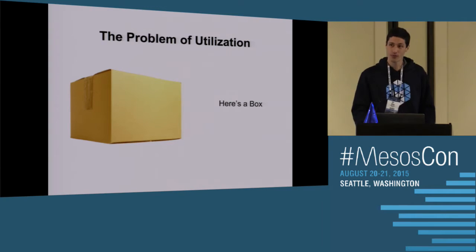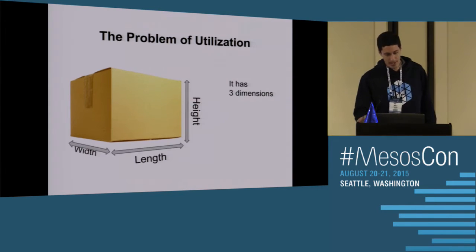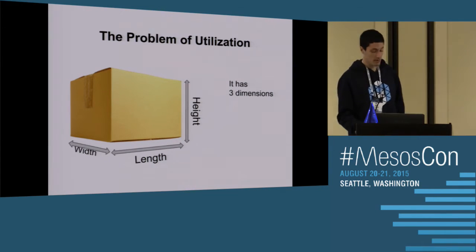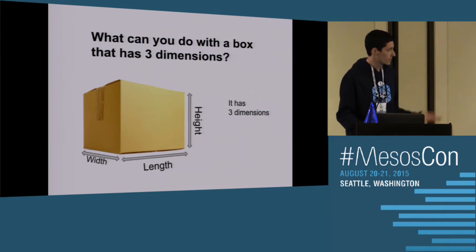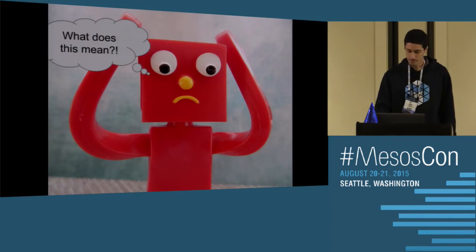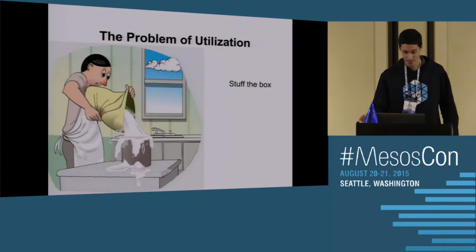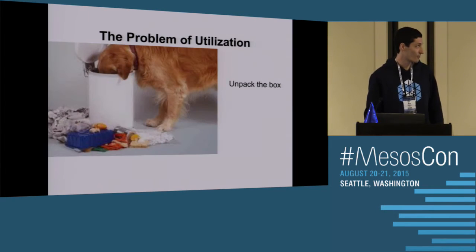When you think about the problem of utilization, you're really talking about a box. A box has three dimensions: width, length, and height. So you can represent a box this way with these three dimensions. What can you do with a box that has three dimensions? Well, you can stuff the box or overstuff it.